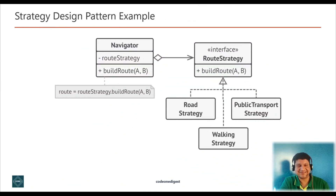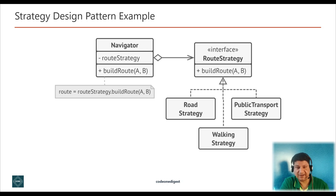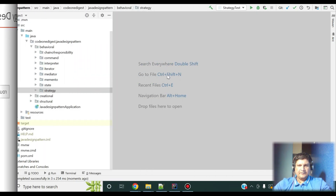The solution to this problem is the strategy pattern. The strategy pattern suggests that you take a class that does something specific and extract all of those algorithms into separate classes called strategies. The original class, called the context, holds a field for storing a reference to one of the strategies. The context delegates the work to the linked strategy object. The client passes the desired strategy to the context, and since all strategies are derived from the same interface, you can add new algorithms or modify existing ones without changing the code of the context or other strategies.